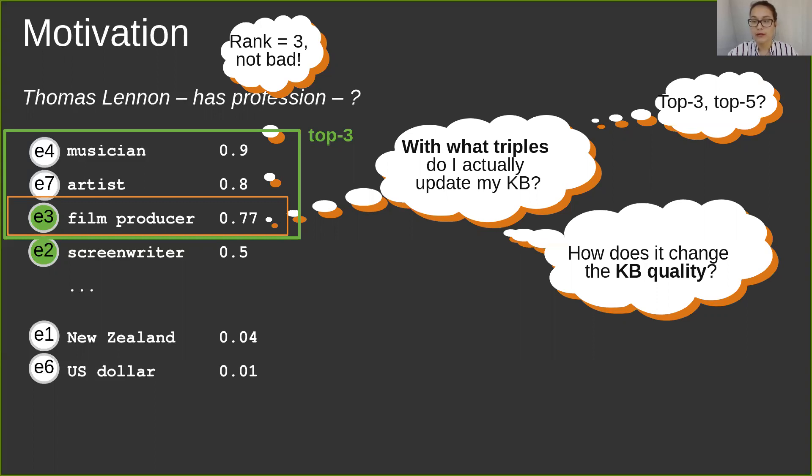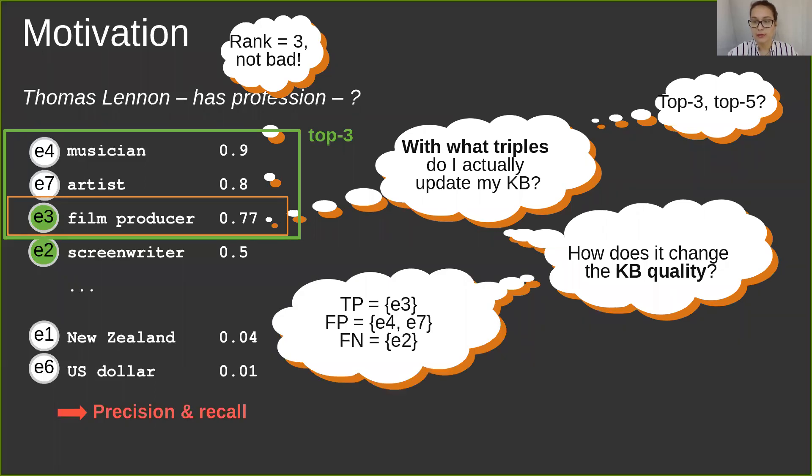But based on the retrieved set of candidates (green frame) and the known correct completion entities (green circles), we can derive a confusion matrix similar to information retrieval, and then compute directly interpretable metrics of precision, recall, and F-score.